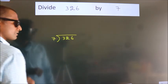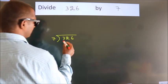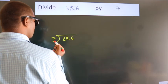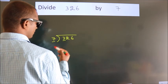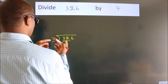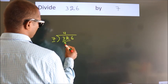This is your step 1. Next, here we have 3, here 7. 3 is smaller than 7. So we should take 2 numbers, 32. A number close to 32 in the 7 table is 7 times 4, 28.